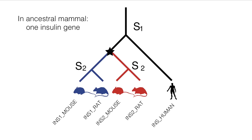To answer this question, we need to look at the history of these five genes, which is depicted in this phylogenetic tree. Here, the node with a star indicates a duplication event, and the nodes labeled with S indicate a speciation event. S1 is the mammalian speciation, while S2 is the rodent speciation.